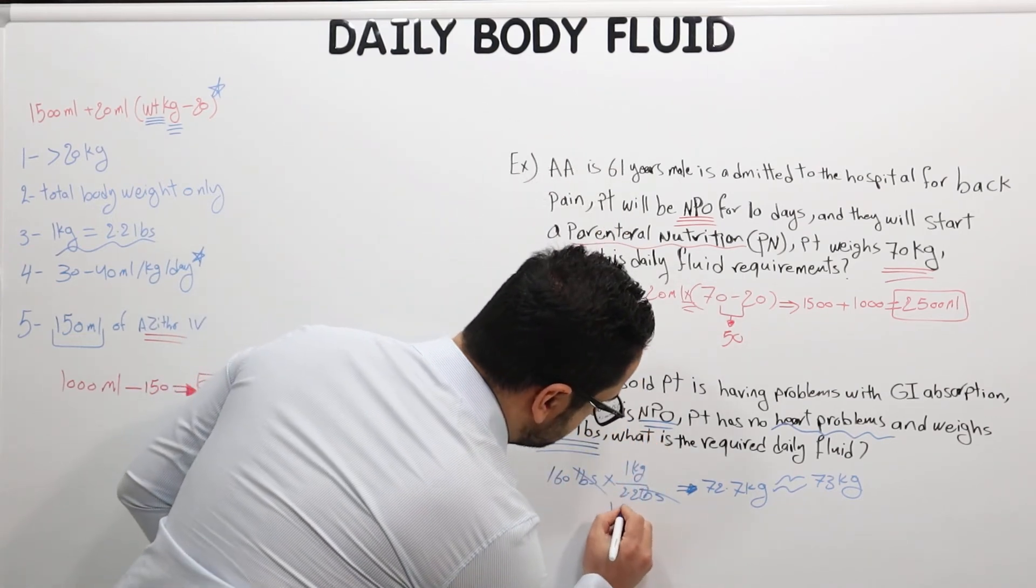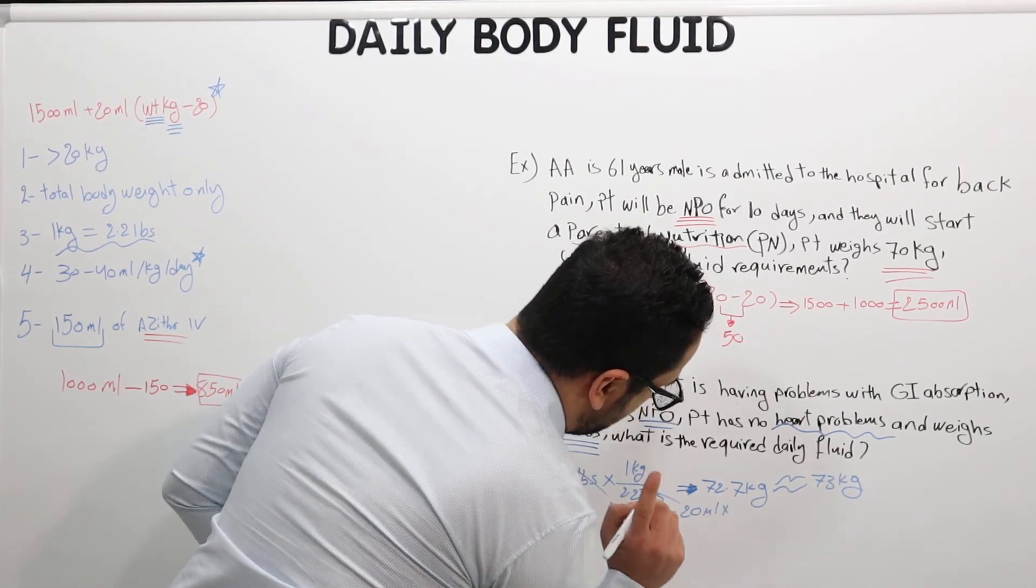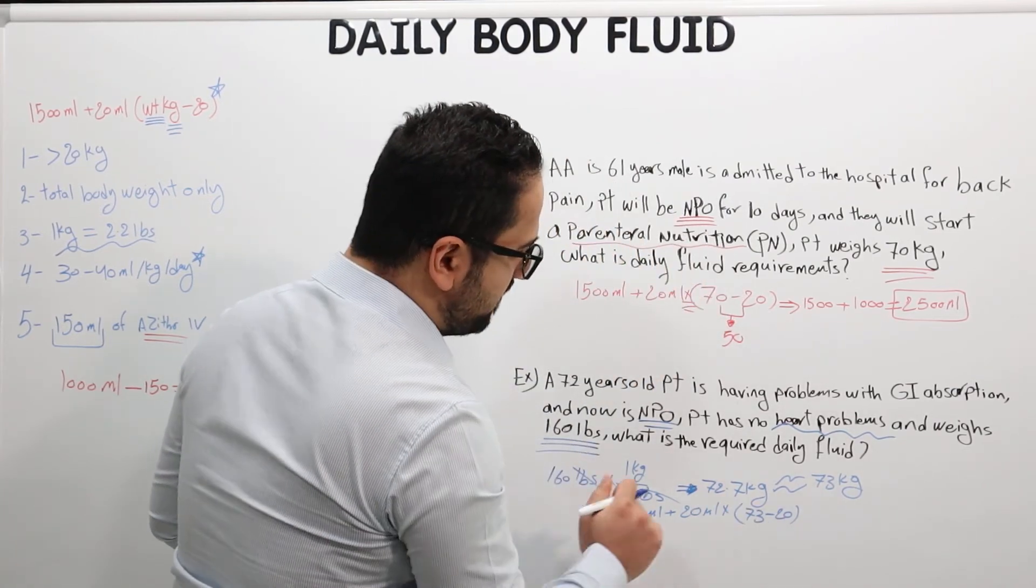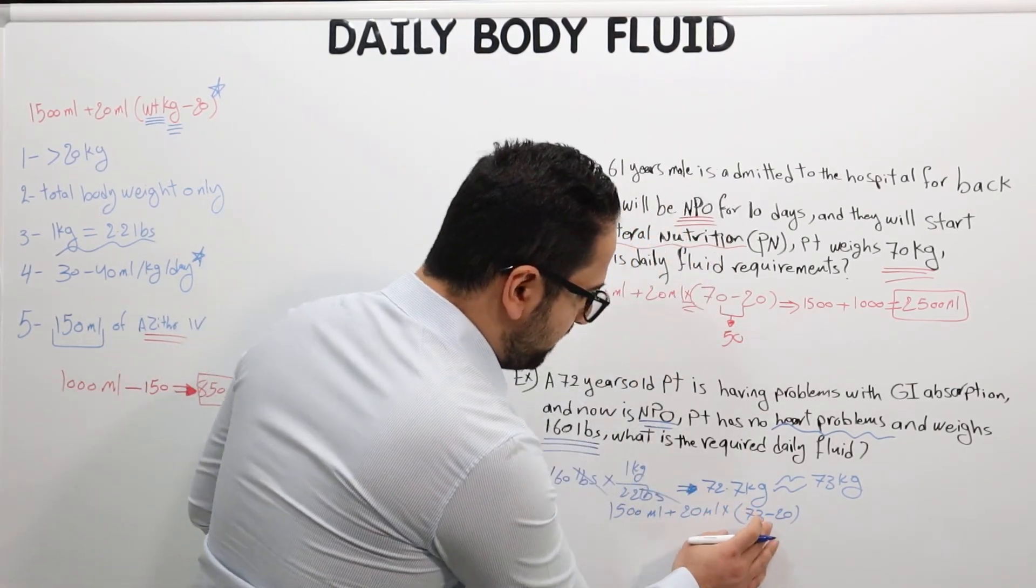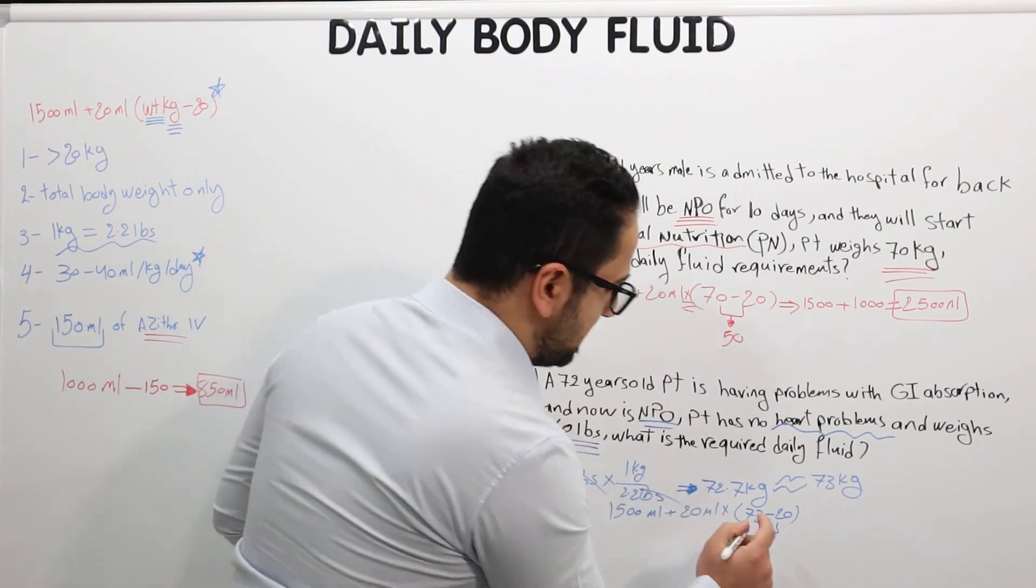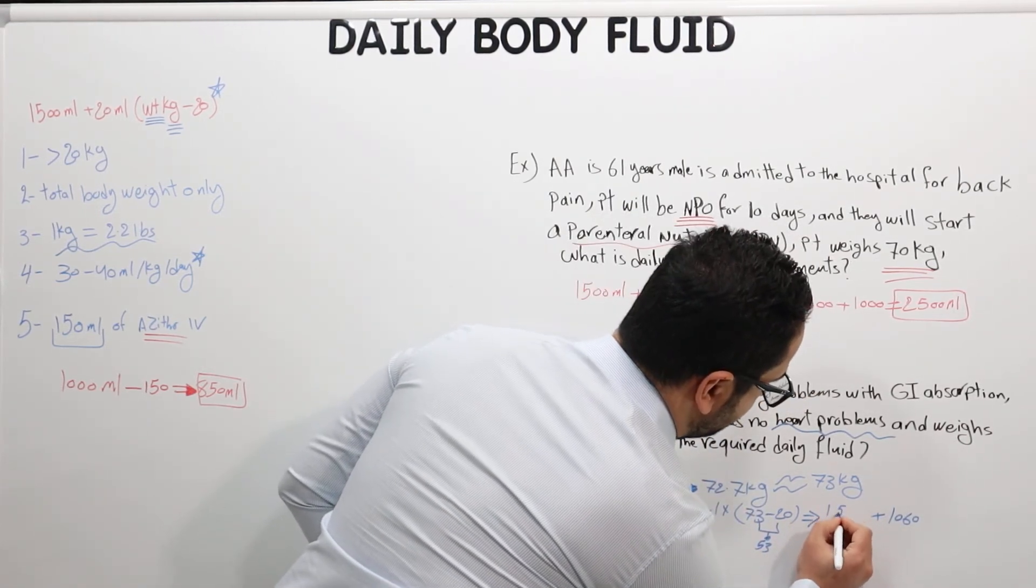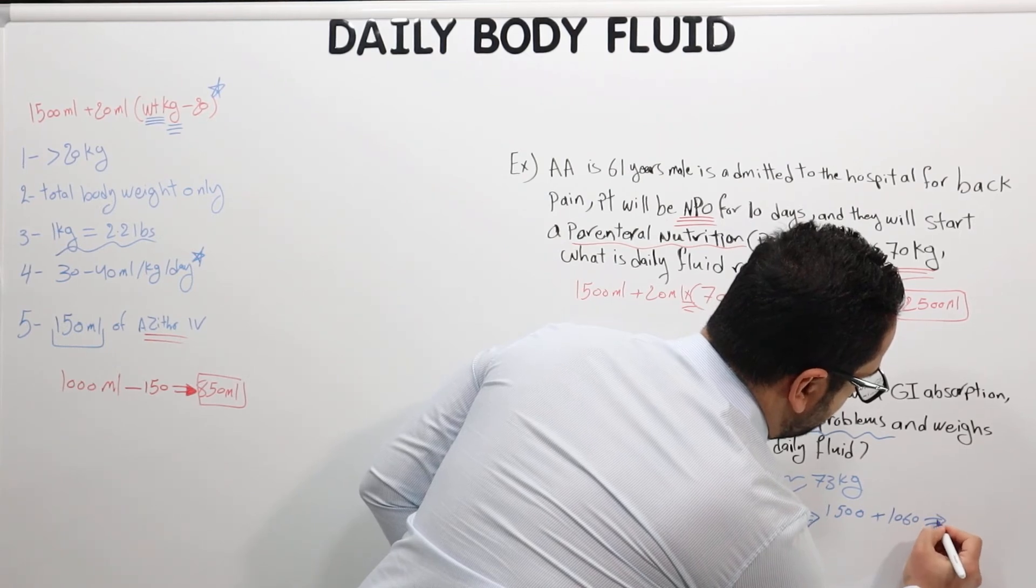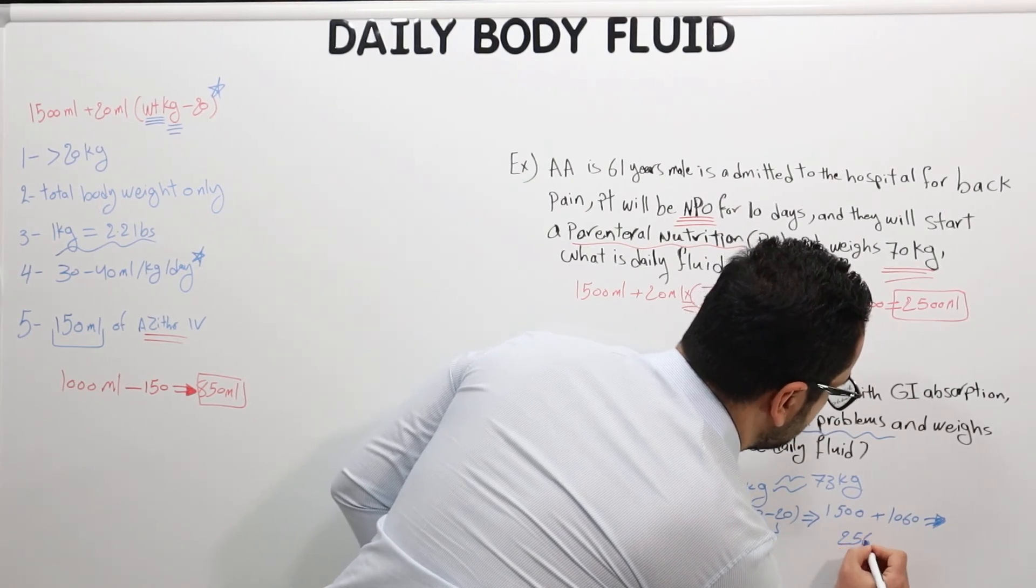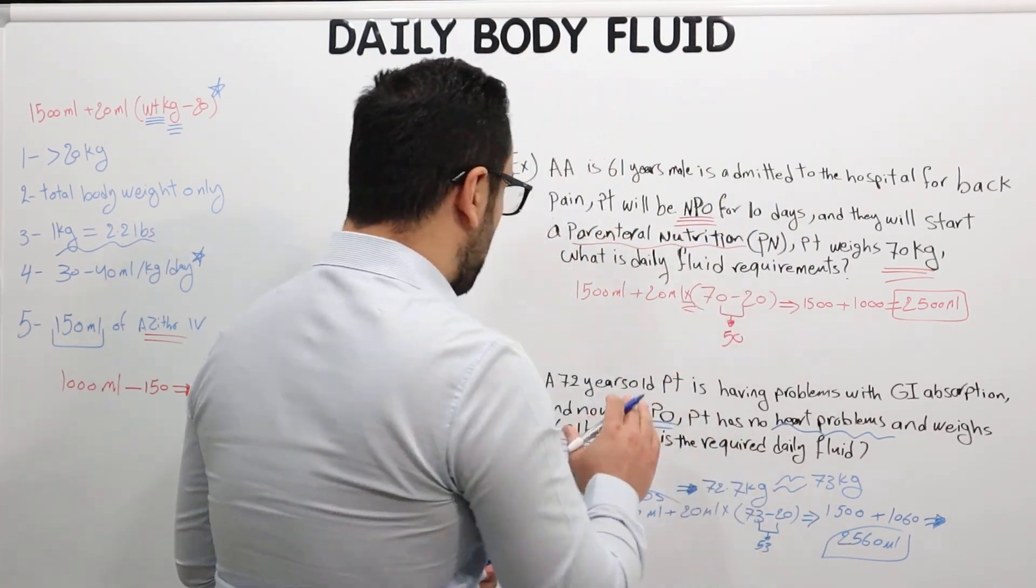Let's apply the formula. So the formula says 1500 milliliters plus 20 milliliters times—remember it's times—total body weight, which is 73, minus 20. 73 minus 20, that's 53. So 53 times 20 is basically 1060, and here we have 1500. So the answer for this patient is going to be 2560 milliliters. And that's the required for this patient as a fluid on a daily basis.